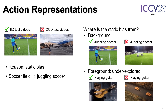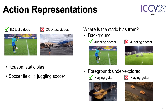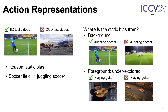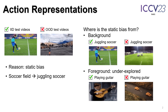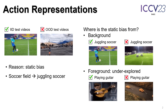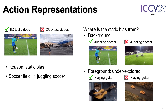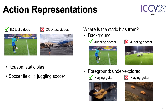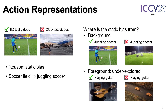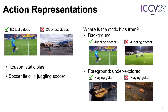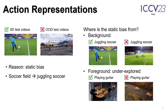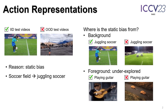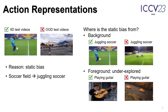We first ask where the static bias is from. It is well known that background bias leads to wrong predictions when a typical background is shown, such as predicting juggling soccer when a soccer field is shown. But foreground static bias has been underexplored. Examples include guitar for guitar playing — guitars could appear in a video but not be played, yet models may wrongly predict playing guitar due to the appearance of guitars.